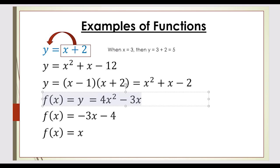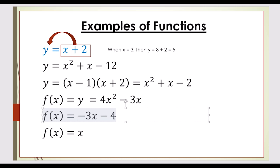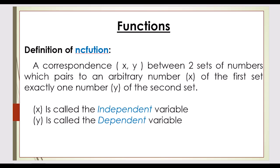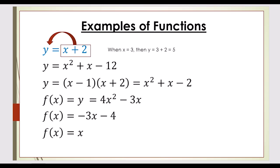Another example is y = 4x² − 3x — this is also a function. We call f(x) the function of x. For instance, f(x) = −3x − 4, or f(x) = x, which is a very simple but valid function. When x = 1, f(x) = 1, and we can graph it as a straight line. So now we know the definition of a function and have seen some examples.